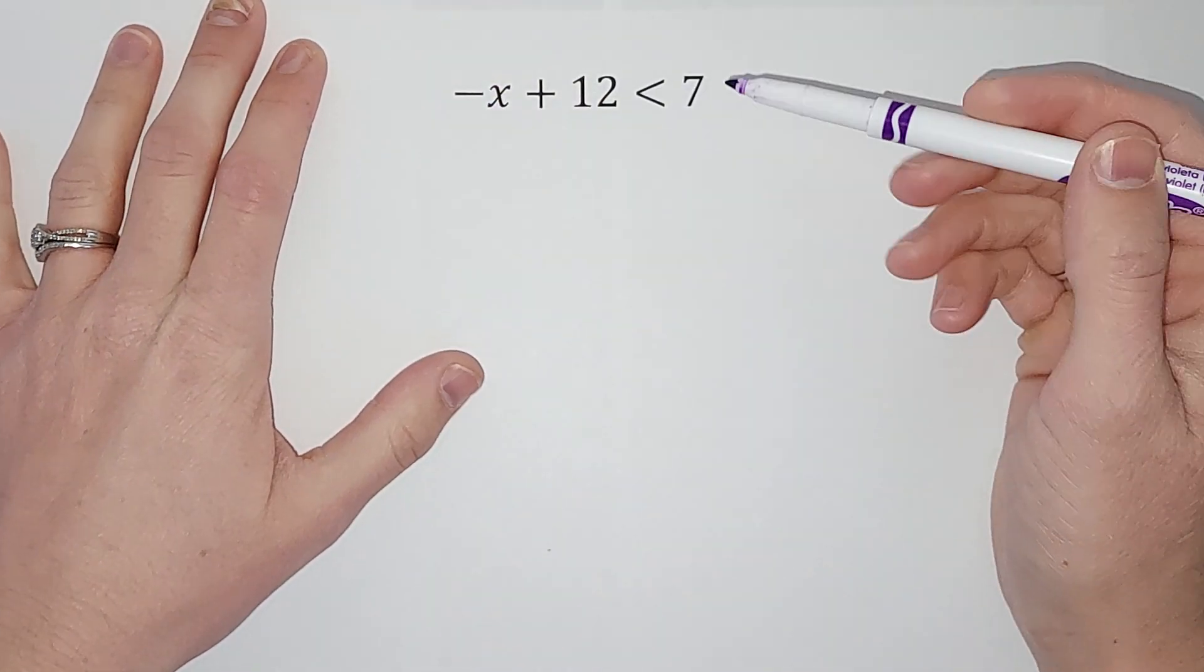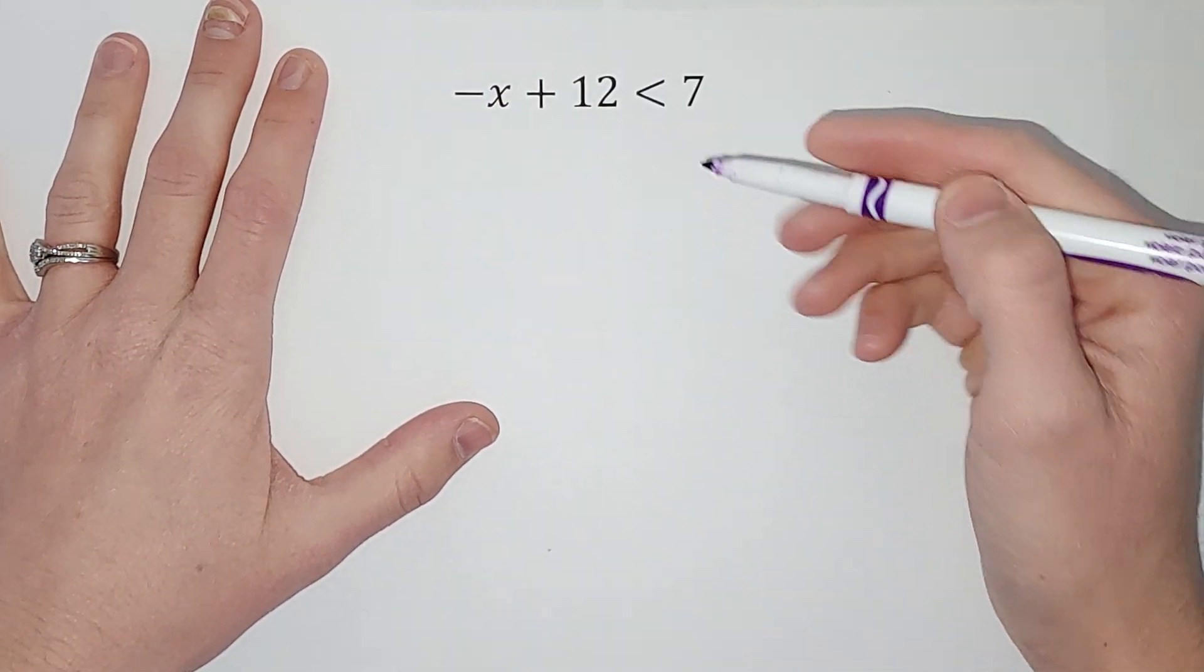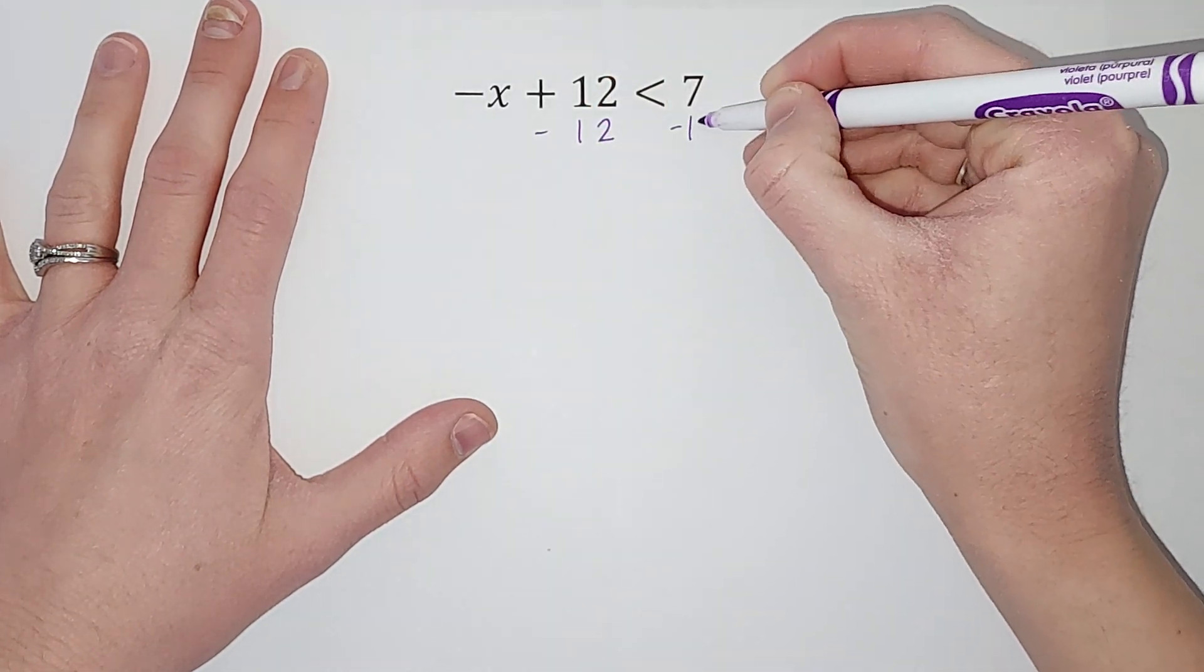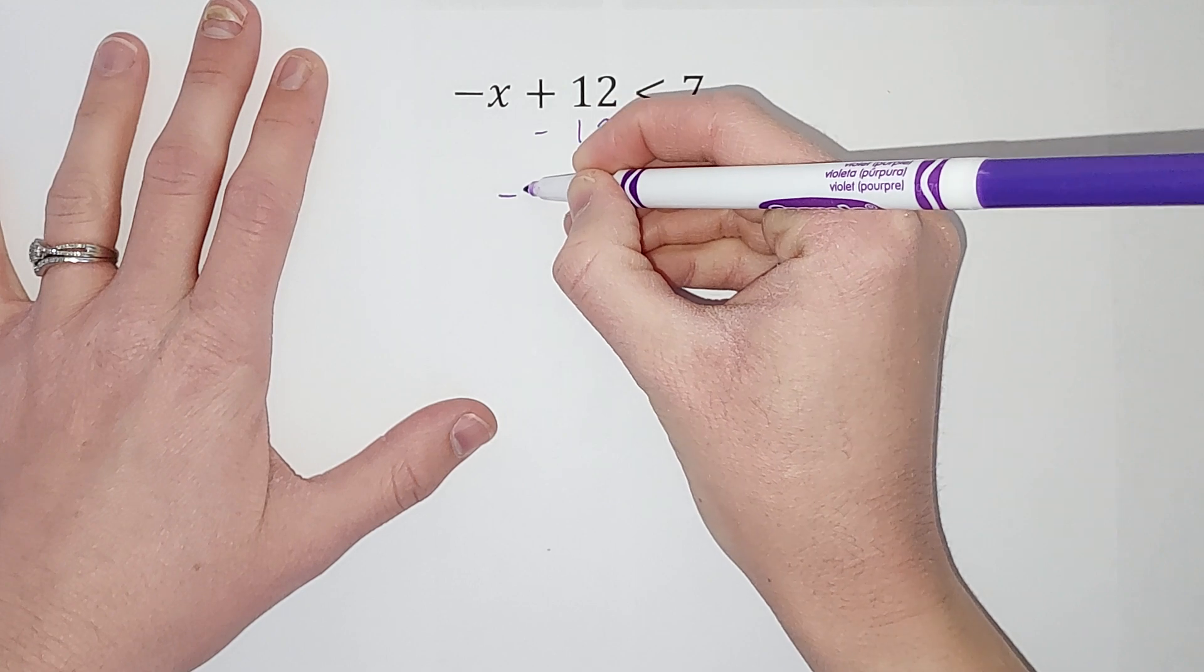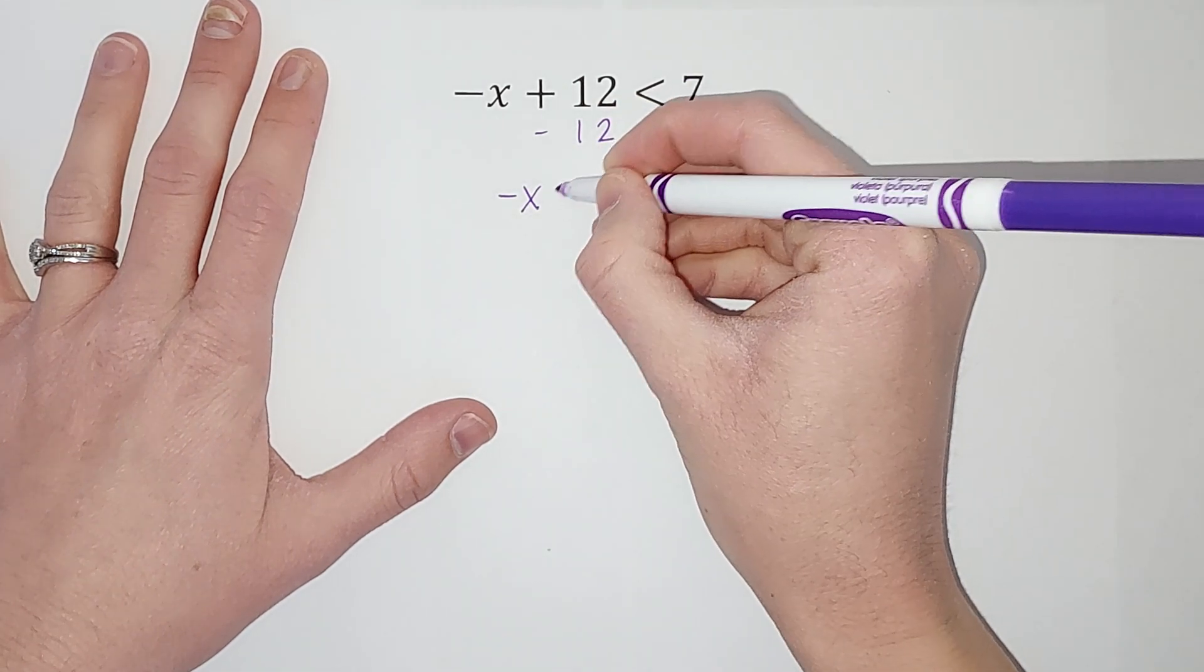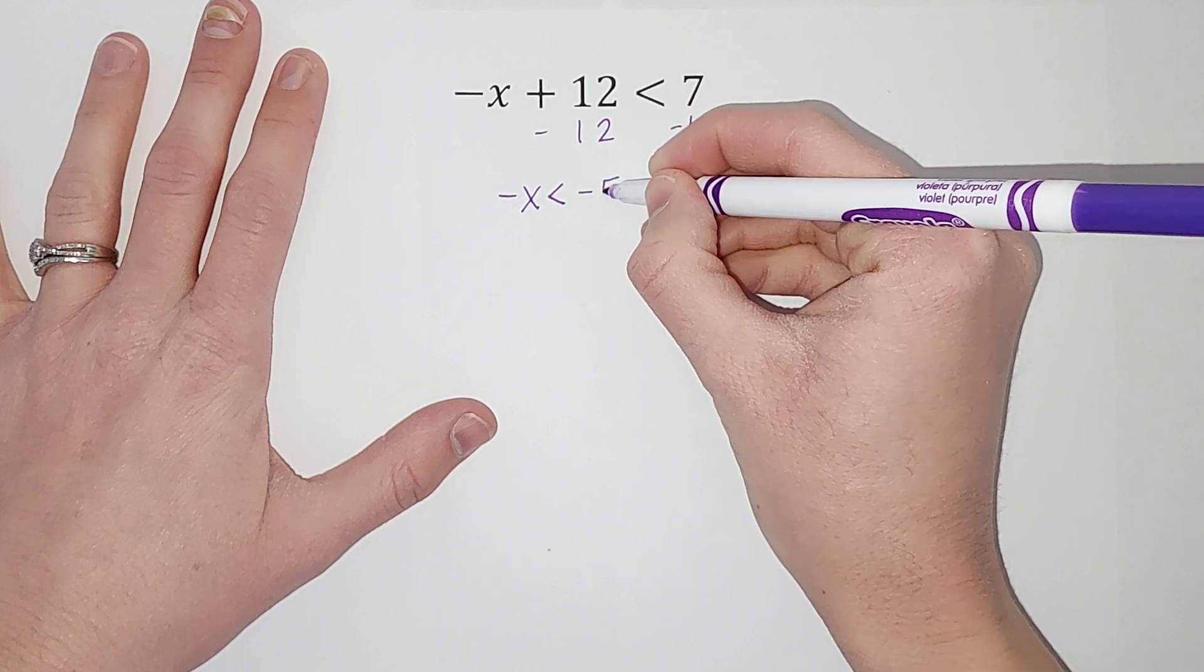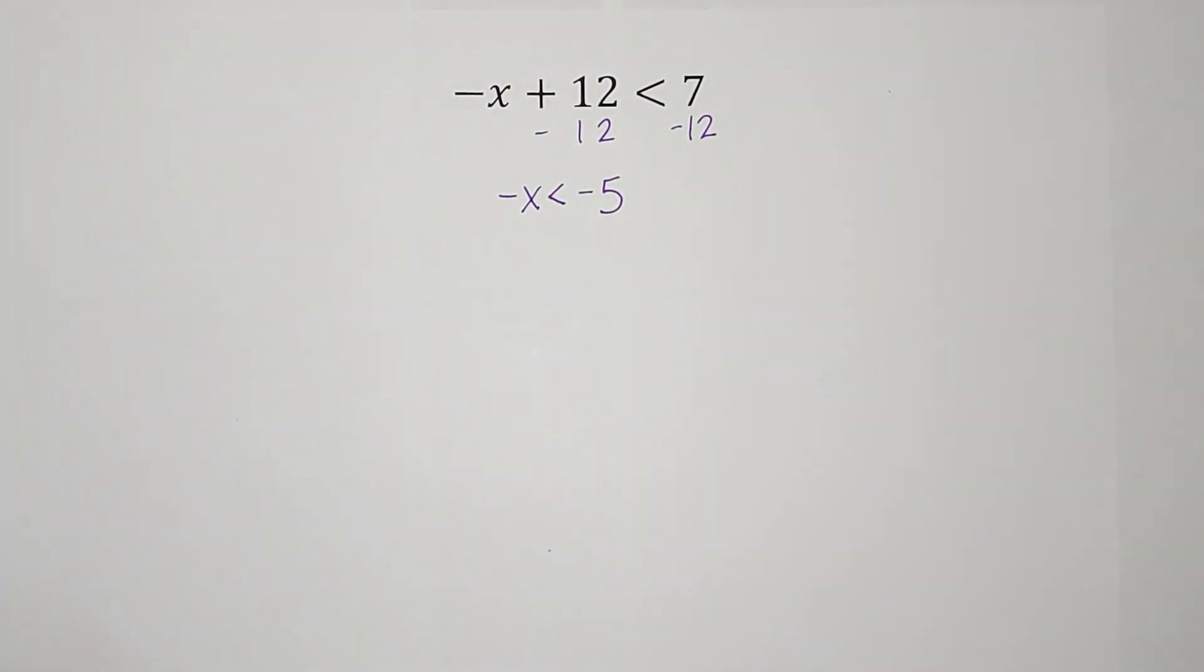So if I were solving this, I'm trying to get x alone, right? So I would subtract 12 from both sides and get negative x is less than negative 5. So here we are. x is alone, but it's negative, so it's not really alone. We want it to be positive.